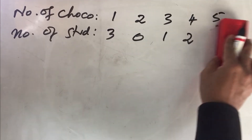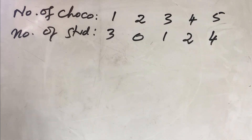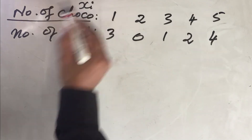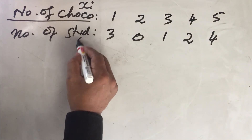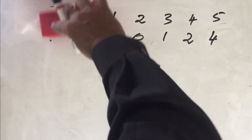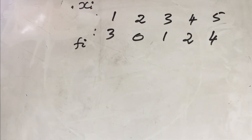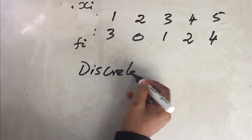The number of chocolates is a stable constant — the independent variable, expressed as x-i. The number of students can keep varying and is dependent on the number of chocolates, so it is the dependent variable, denoted as f-i. This kind of arrangement is called discrete distribution.